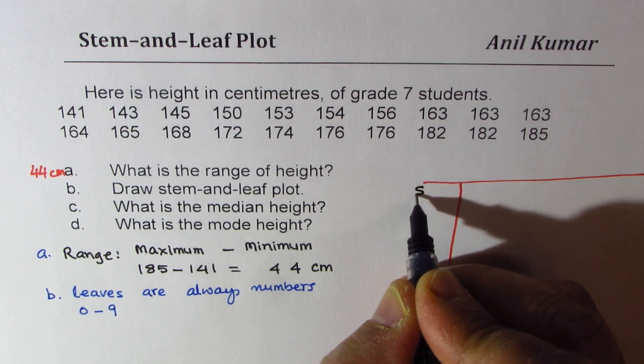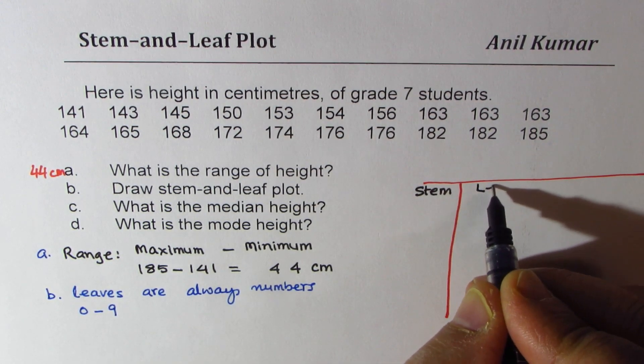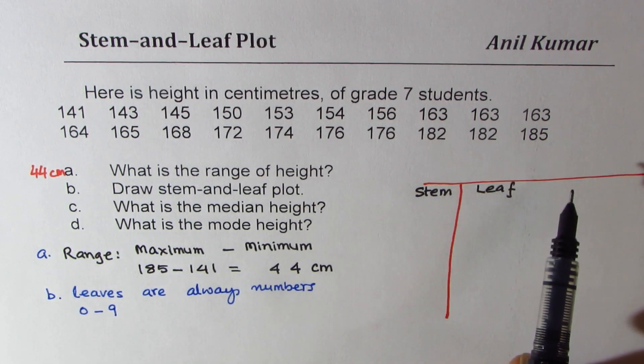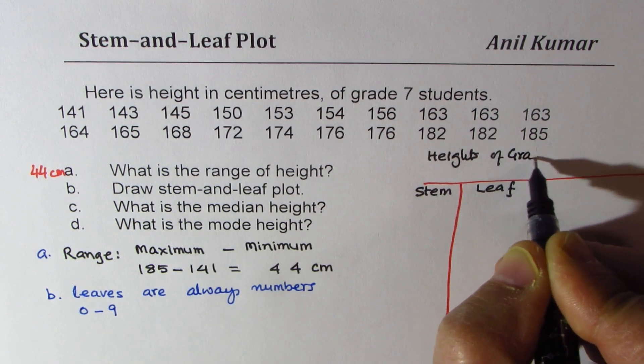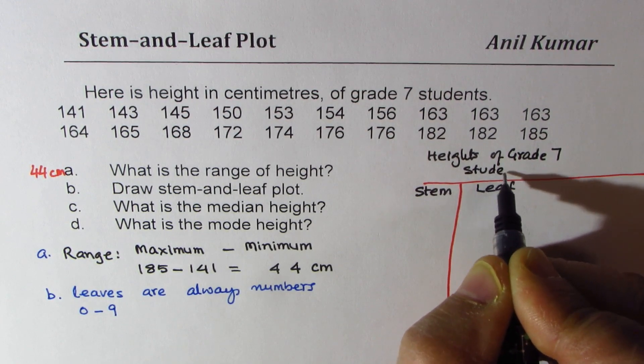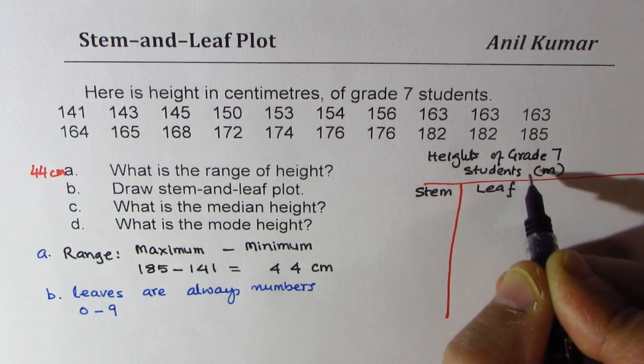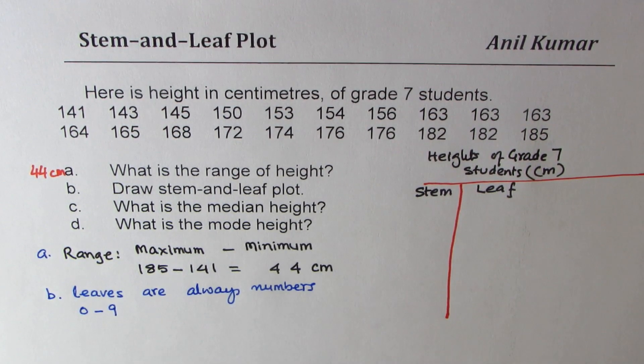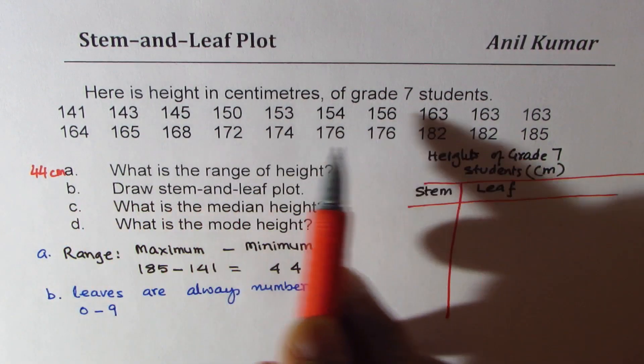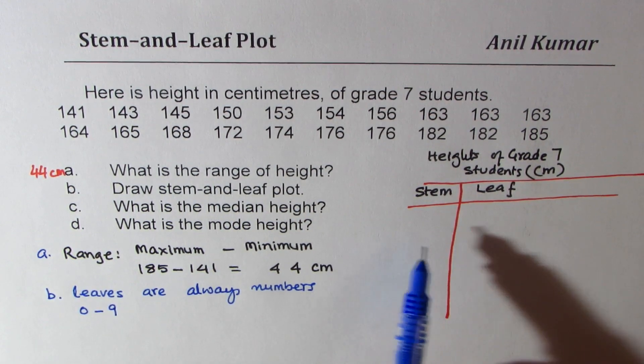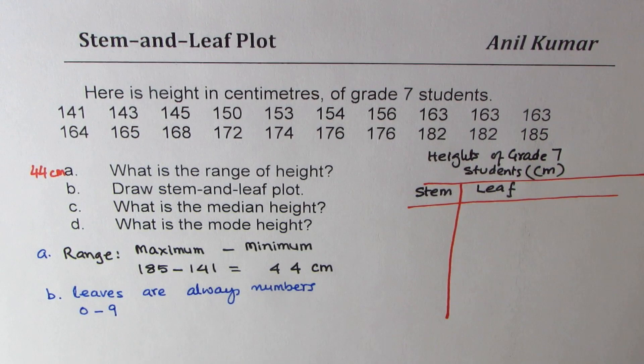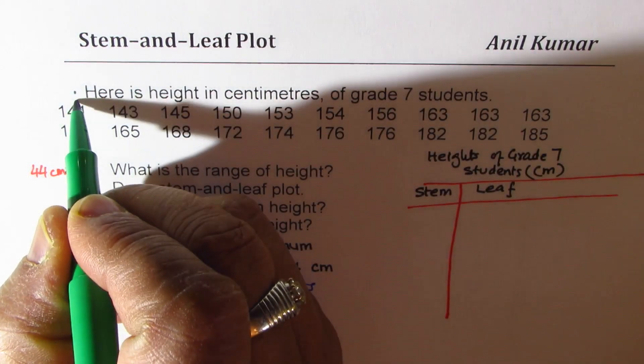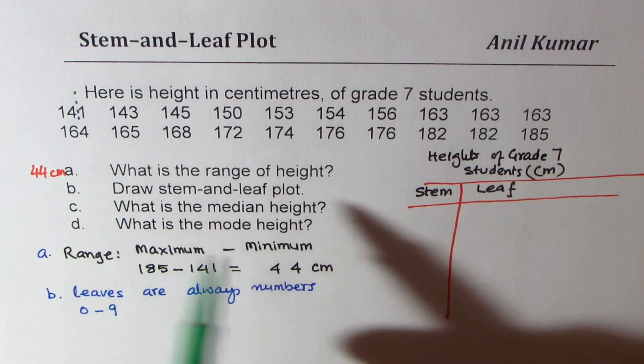We can write here stem and leaf. Title goes on the top which is a must, which is heights of grade 7 students, units being centimeter. Since the data is properly organized, it is easy for me to fill in the information here, but normally raw data will be given. You have to organize. You place only the ones place in the leaf part. So ones place go to the leaf part and rest all comes to the stem.